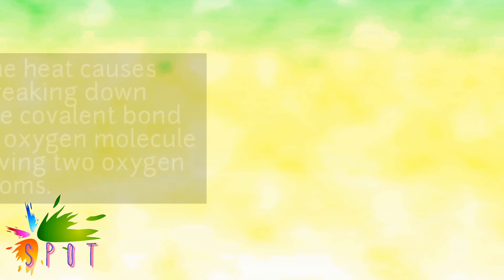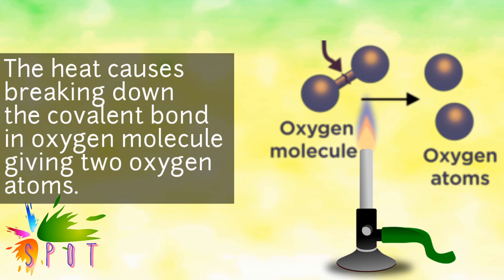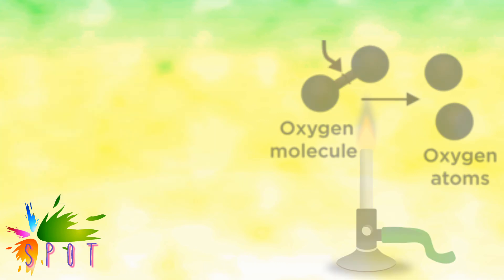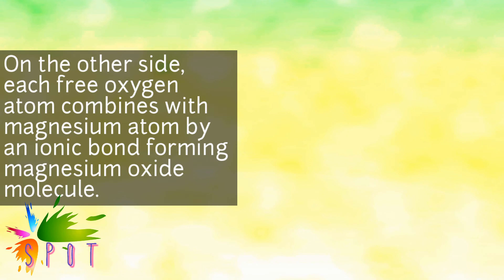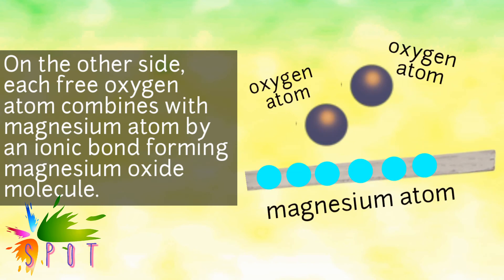The heat causes breaking down the covalent bond in the oxygen molecule, giving two oxygen atoms. On the other side, each free oxygen atom combines with a magnesium atom by an ionic bond, forming a magnesium oxide molecule.